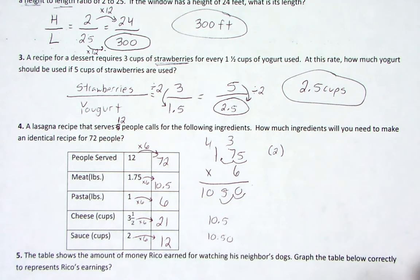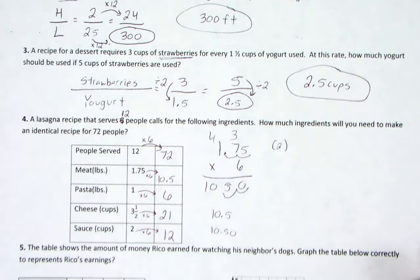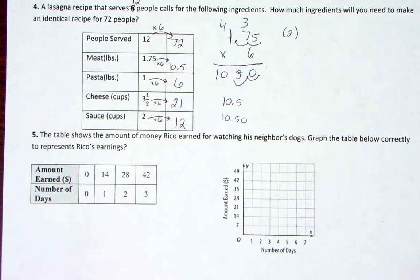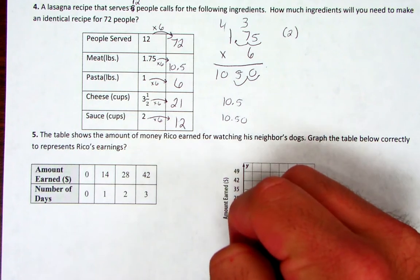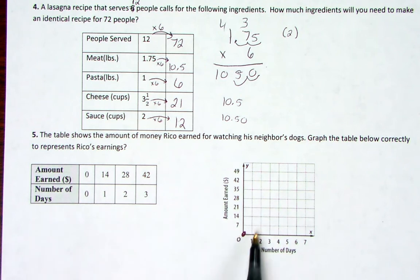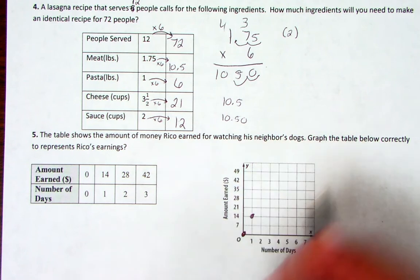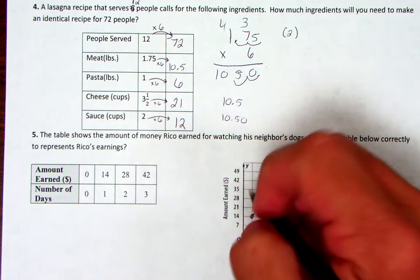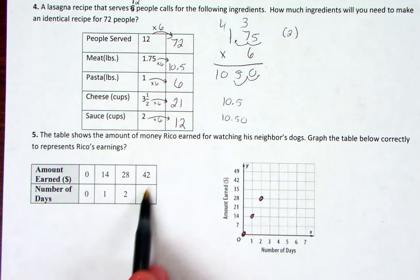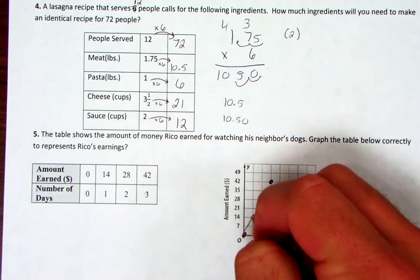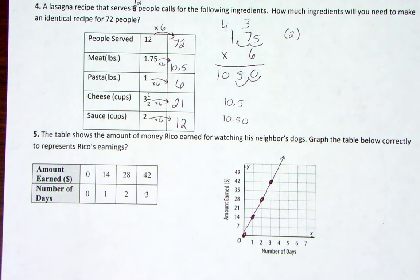Number five: The table shows the amount of money Rico earned for watching his neighbor's dogs. Graph the table below correctly that represents Rico's earnings. If he doesn't work, he makes no money. If he watches the dog for one day, he makes $14. Two days gets $28, three days makes $42. So over to 3, up to 42 - it makes a nice linear graph. A linear means straight line, and that graph would be proportional.